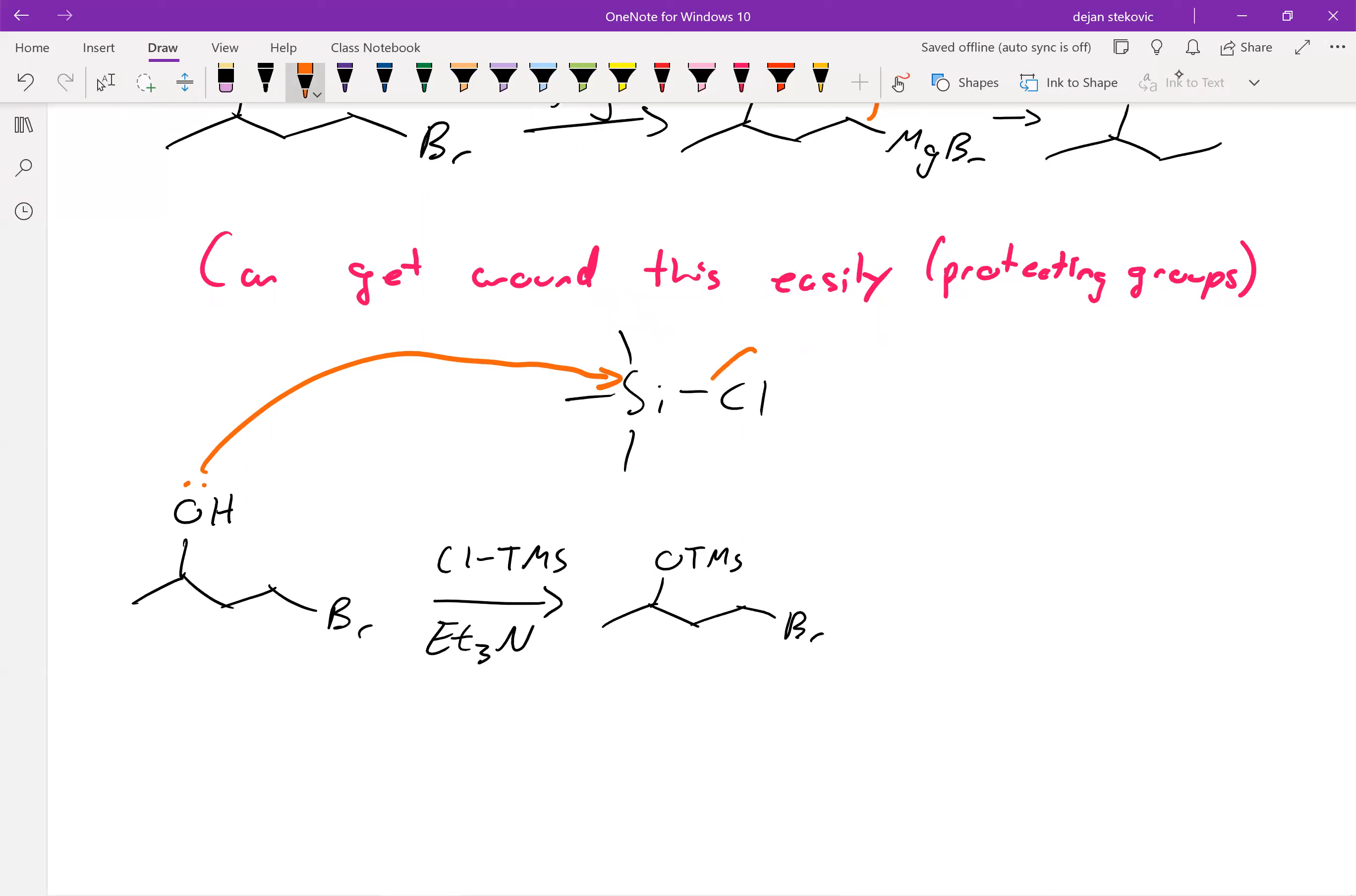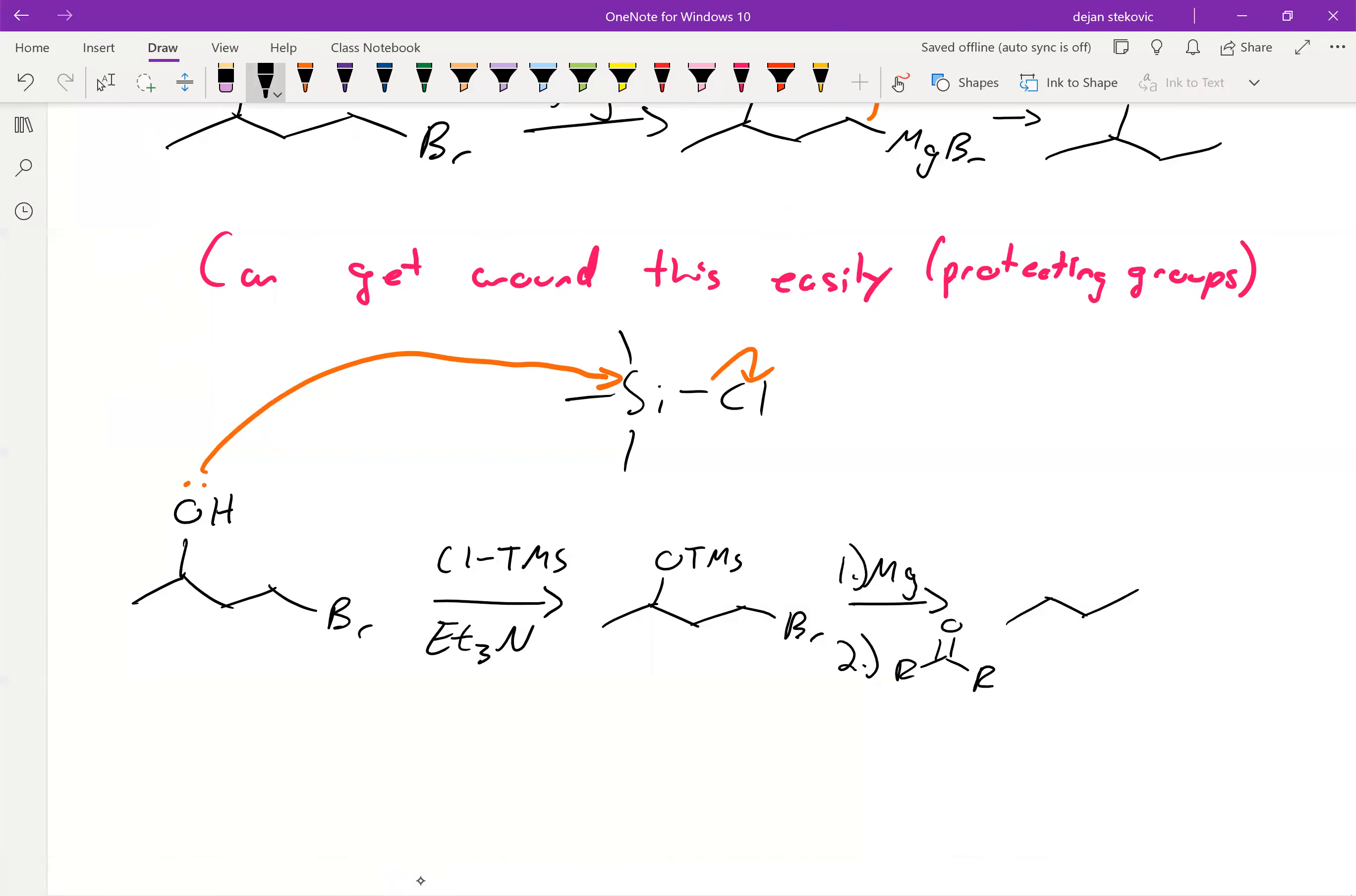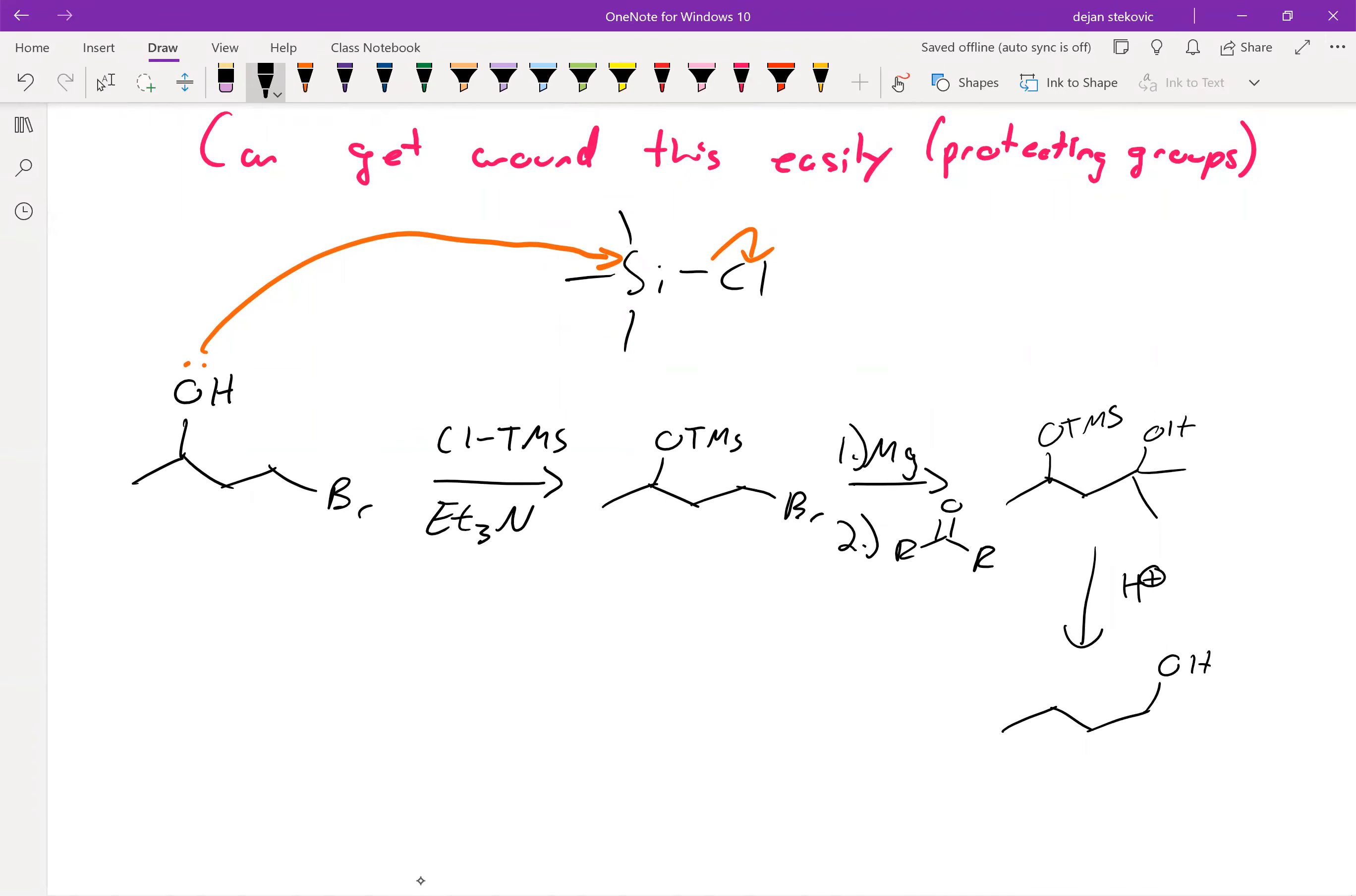Now that we have that OTMS there, we can then go ahead and add our magnesium to form our Grignard reagent. And then it won't do a reaction within itself. And then after that, you can add your carbonyl of interest and thus form your larger molecule. And then you can simply remove the TMS by the addition of some acid to get your alcohol group back.